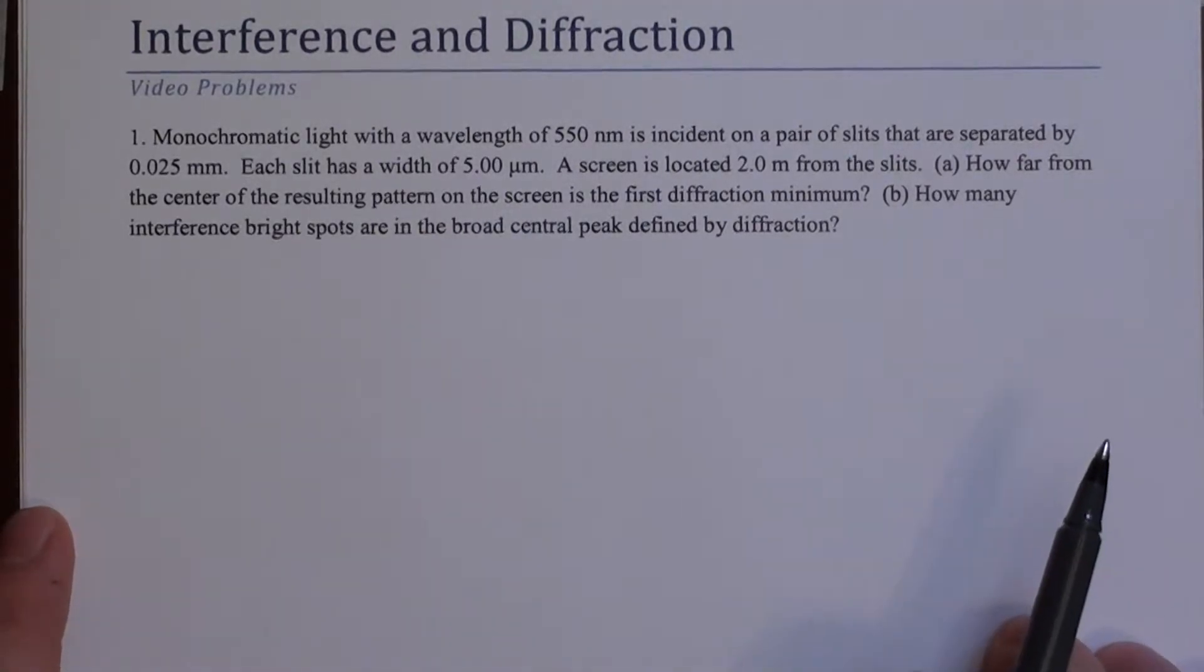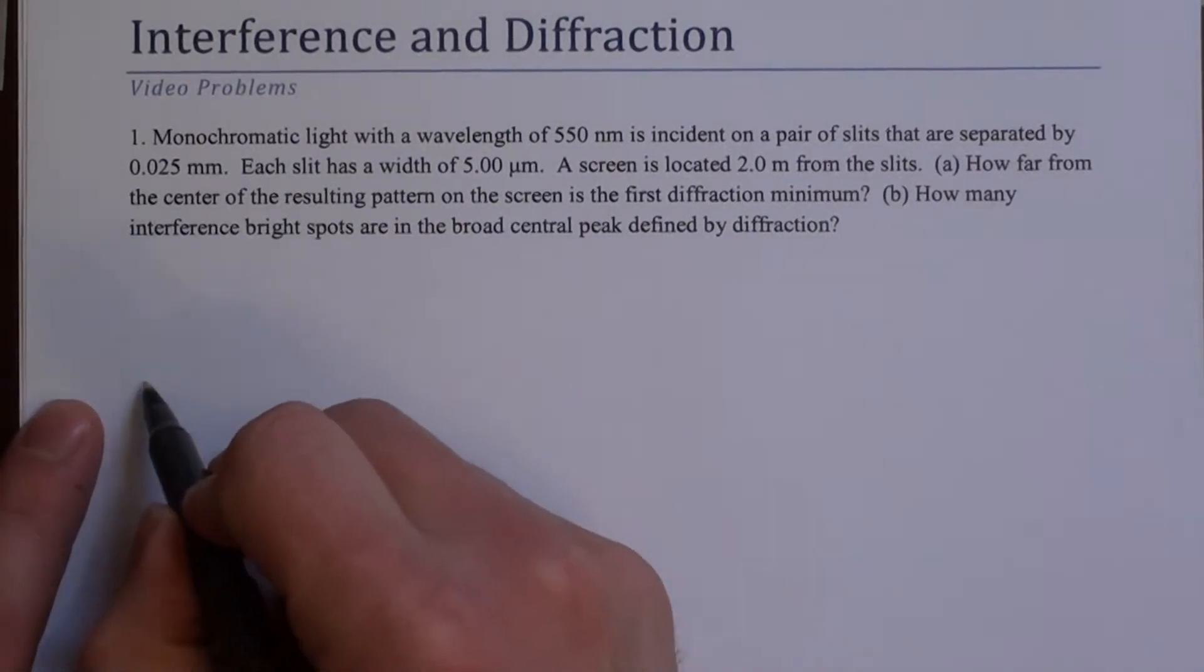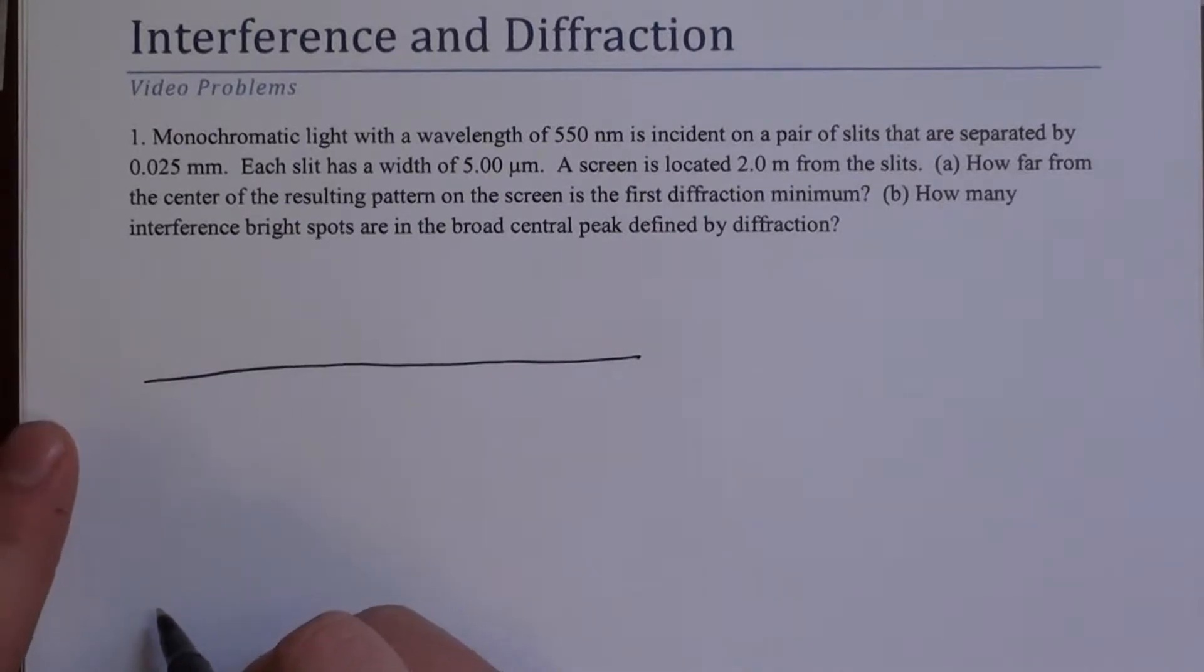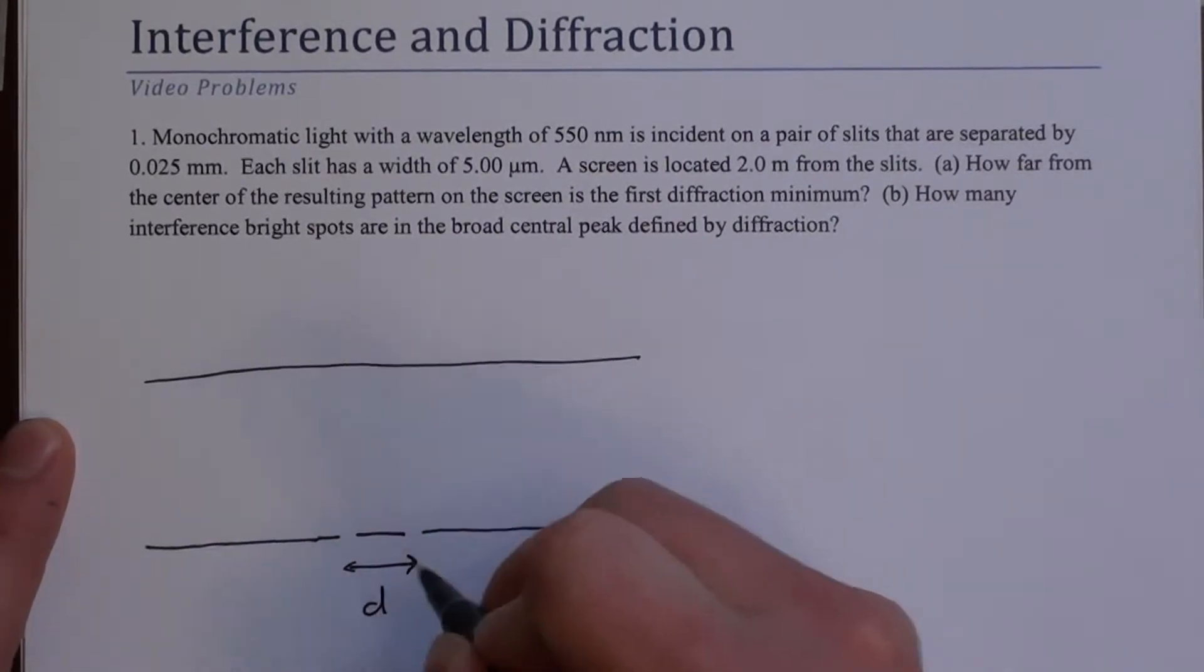A screen is located 2 meters from the slits. So let's draw this out first. Maybe let's say this is the screen, and here are the slits. So this distance here is, label it as d.